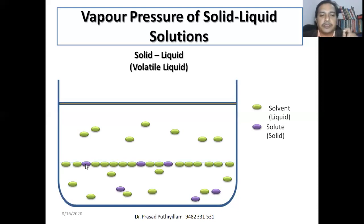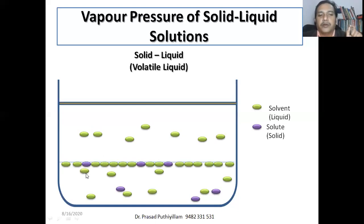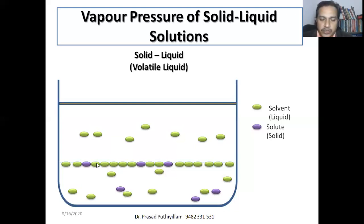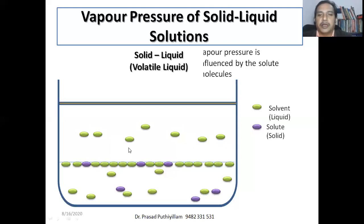If the surface is filled with some solute molecules, these solute molecules are non-volatile — they will not convert into gas. Therefore, further, some of the liquid molecules will find it difficult to go to the vaporized state; it will be hindered. Since solute particles cover the surface of the solution layer, the effective conversion of liquid molecules to vaporized state will be hindered. There will be a reduction in vapor pressure, which is influenced by the solute molecules.